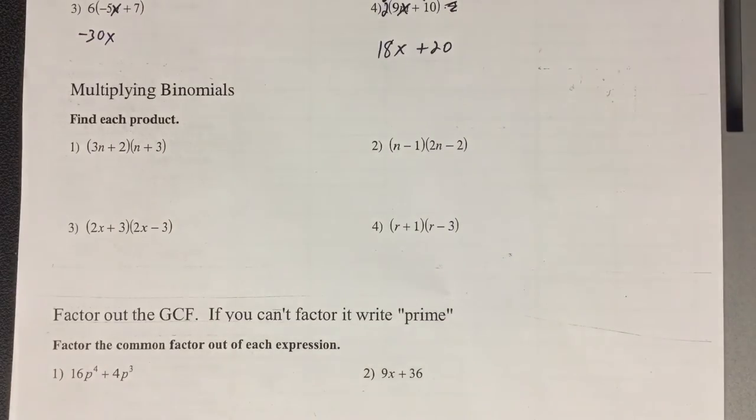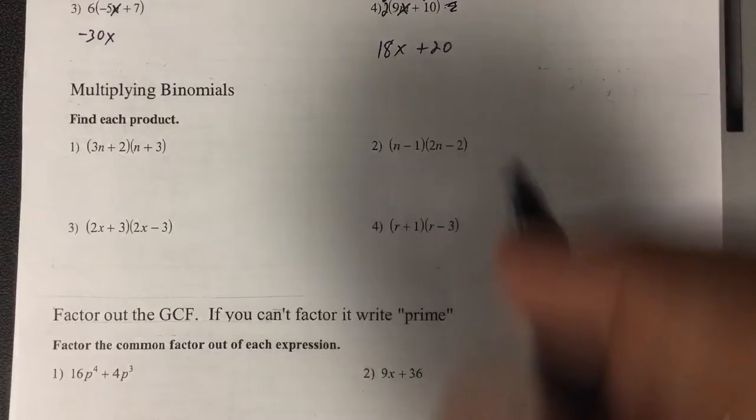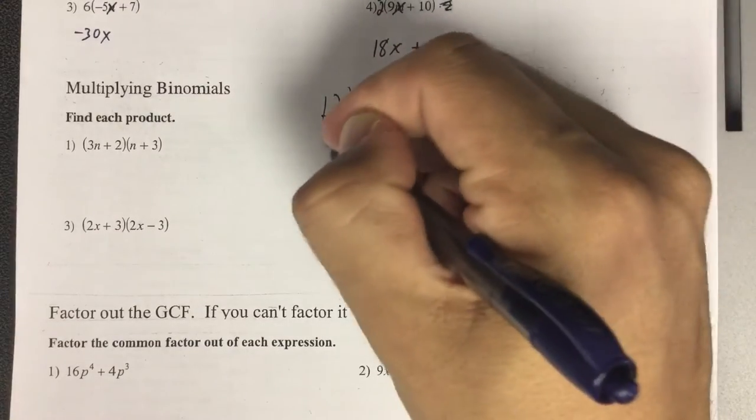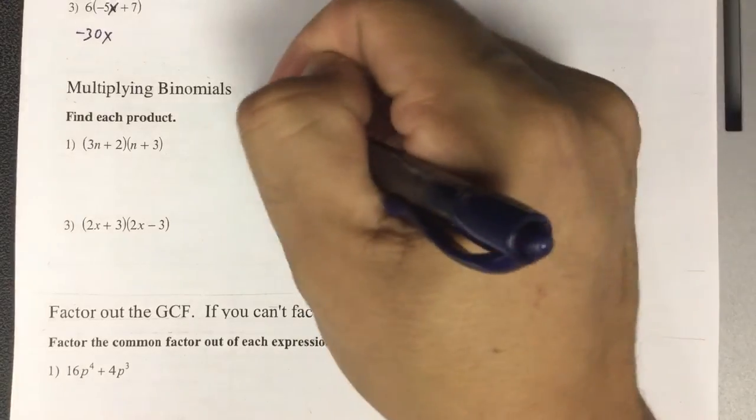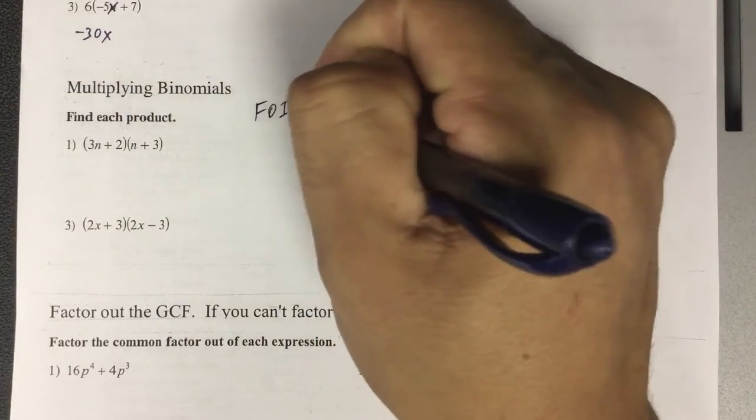When we're multiplying binomials, you've been taught different ways. You've been taught what was called FOIL, you've been taught a box method where you put a box with the terms and then added up all the terms. You also did what was called FOIL: first, outer, inner, last.